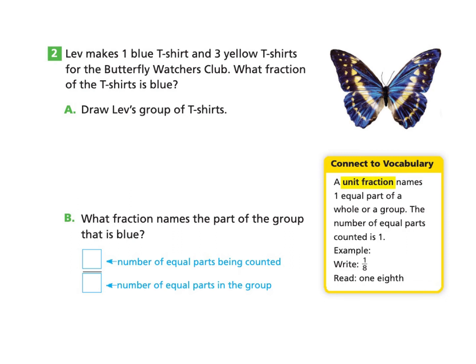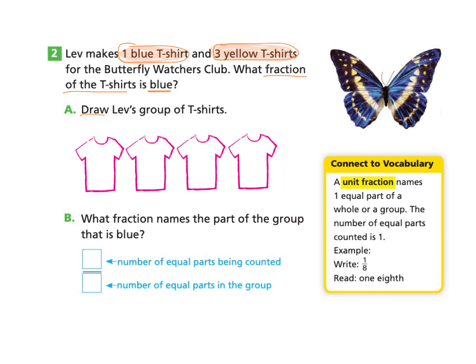Now let's take a look at the next page, page 359, part two. Lev makes one blue t-shirt and three yellow t-shirts for the Butterfly Watchers Club. What fraction of the t-shirts is blue? Let's do a step-by-step and follow part A: Draw Lev's group of t-shirts. There is one blue shirt and three yellow shirts, so there are four shirts total because one plus three makes four. We draw four shirts, and we label one B for blue and three Y for yellow.